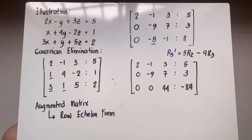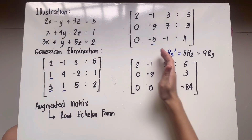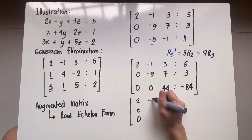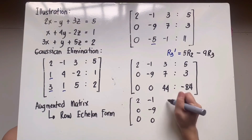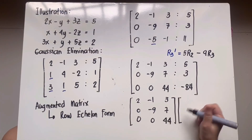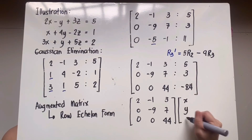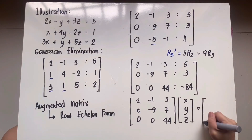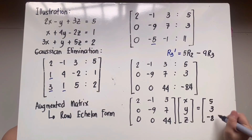Now the augmented matrix is in upper triangular form. We return it to matrix equation form: the coefficient matrix [2, −1, 3 / 0, −9, 7 / 0, 0, 44] multiplied by [x, y, z] equals the constants [5, 3, negative 84]. This allows us to solve by back-substitution.